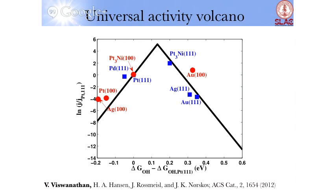And what actually it points to is something very interesting here. Platinum-3-nickel (111) is active because of its position on the right leg of the volcano. So that's the weak binding leg. And then platinum-3-nickel (100) is active because of its position on the left binding leg of the volcano.